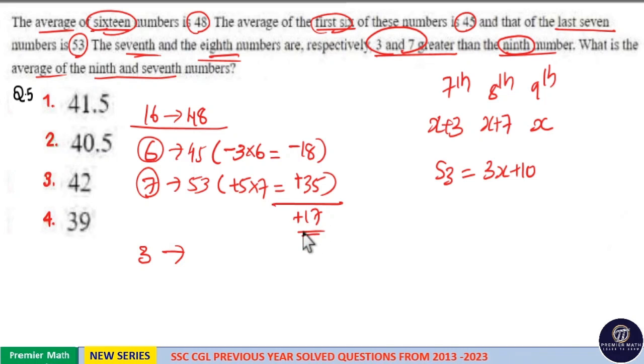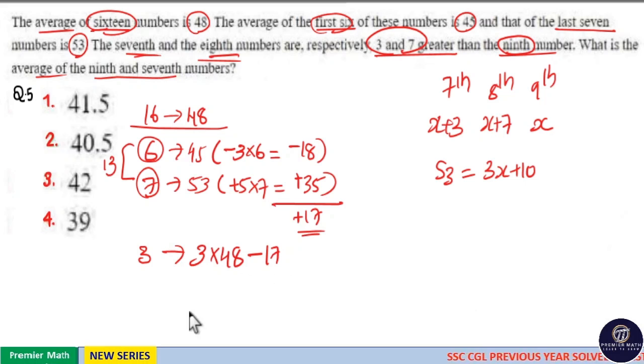Which means there is total 17 increment in the sum of this 13 numbers. Which means we have to subtract the 17 from sum of this 3 numbers. Sum of this 3 numbers is equal to 3 into 48, but there is 17 increment for this 13 numbers. So we have to subtract the 17 from 3 into 48, which will give you the original sum of this 3 numbers.